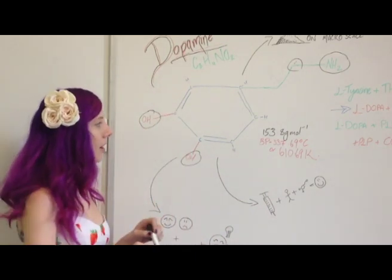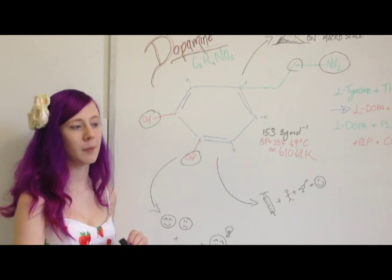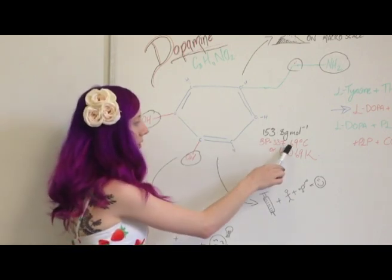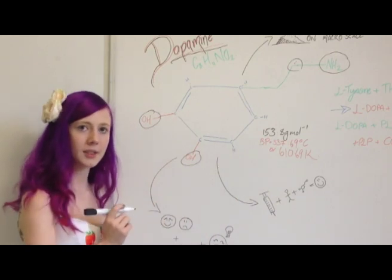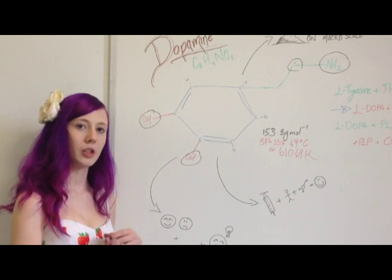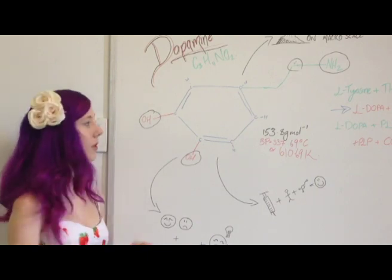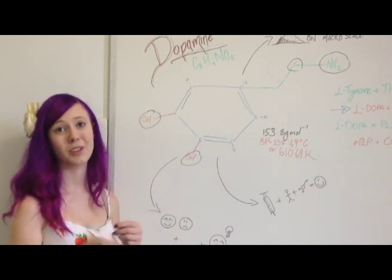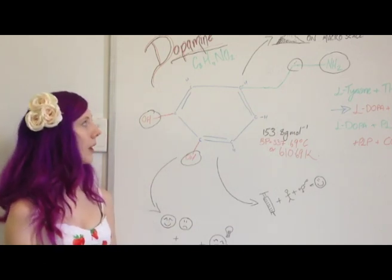In total, it has a 153.8 gram per mole molar weight and a boiling point of 337.69 degrees Celsius, or 610.69 degrees Kelvin, which is so high because you've got a lot of ionic bonds and covalent bonds which are all pretty strong, so you need a lot of energy to break that molecule up.